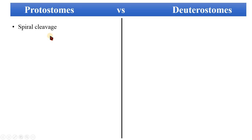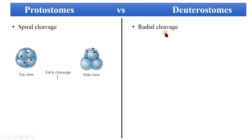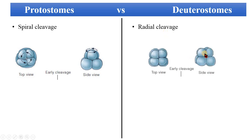Protostomes have spiral cleavage. In spiral cleavage, the upper tier of cells is spirally arranged on the lower tier, so the upper cells are not directly aligned above the lower cells. In the case of deuterostomes, they have radial cleavage. In radial cleavage, the upper cells are directly present on the lower cells and are not spirally arranged — they are parallel to each other.